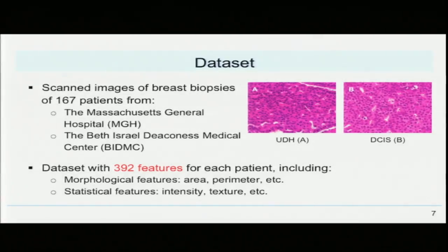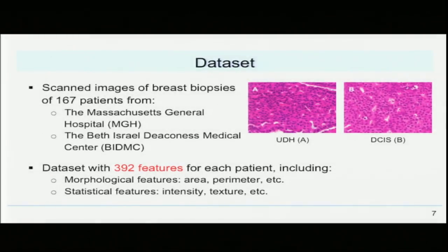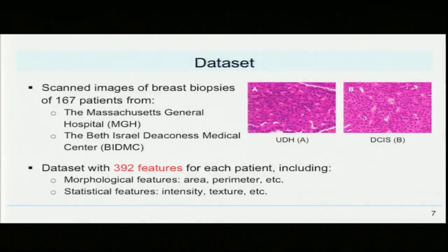We obtained scanned images of breast biopsies from 167 samples from two different hospitals: the Massachusetts General Hospital and the Beth Israel Deaconess Medical Center. From each sample, we extracted 392 features, including morphological features such as area and perimeter, and statistical features such as intensity and texture.